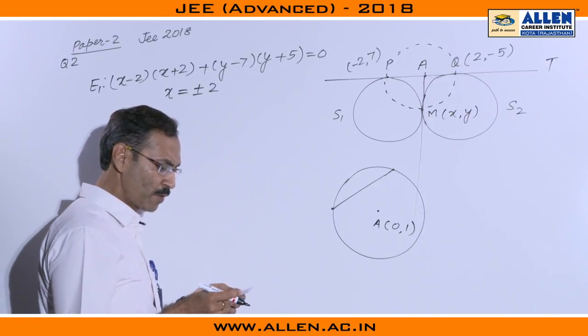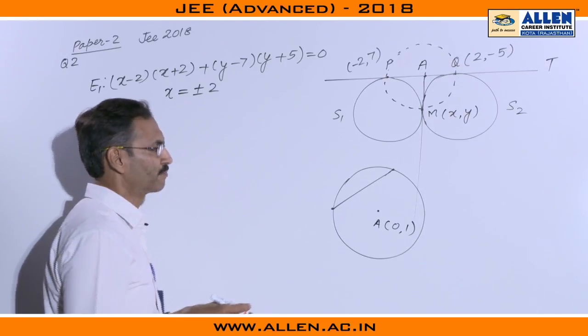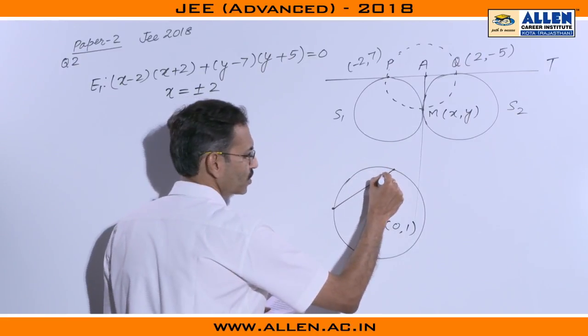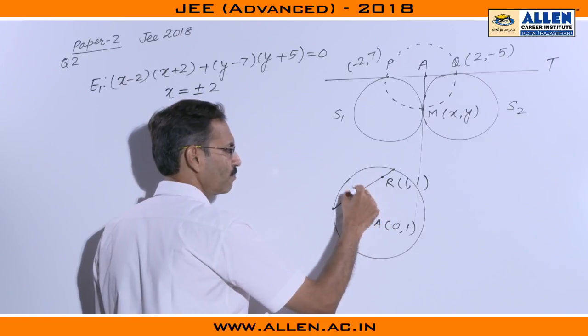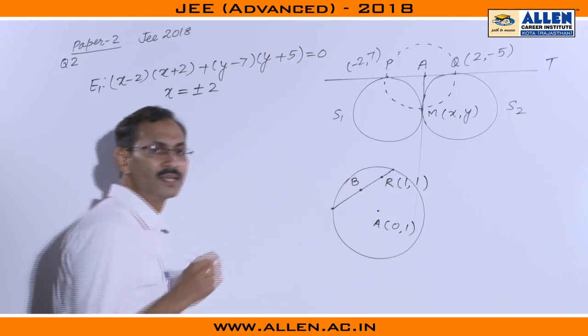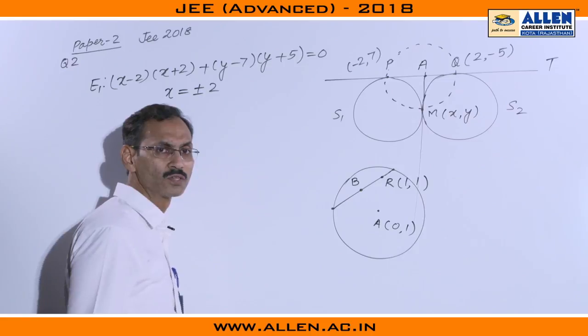E2 will be the set of all midpoints of the line segment in the set F2. This is say R 1 comma 1 and we have to find the locus of midpoint of all these line segments. So we have to find the locus of B.